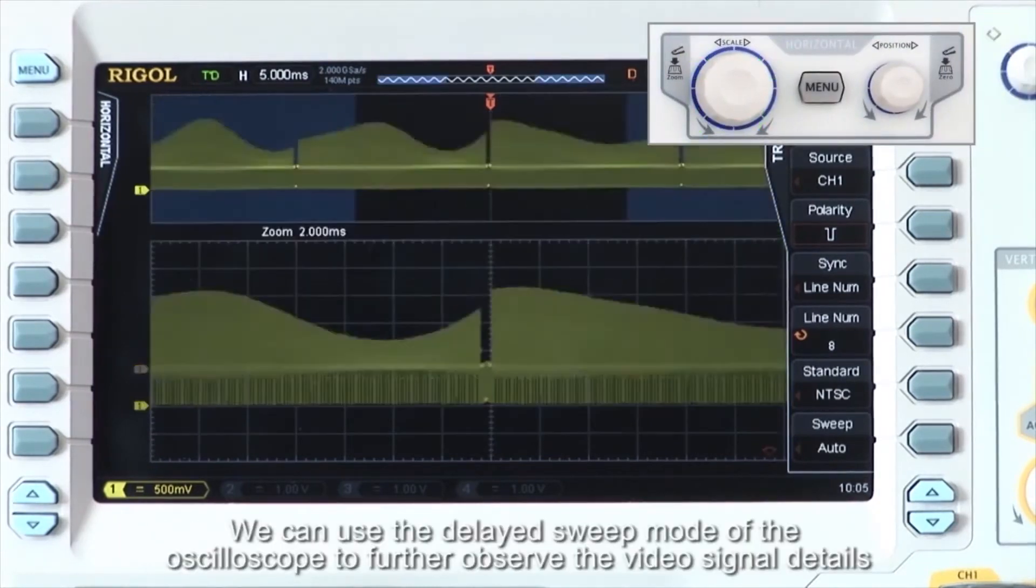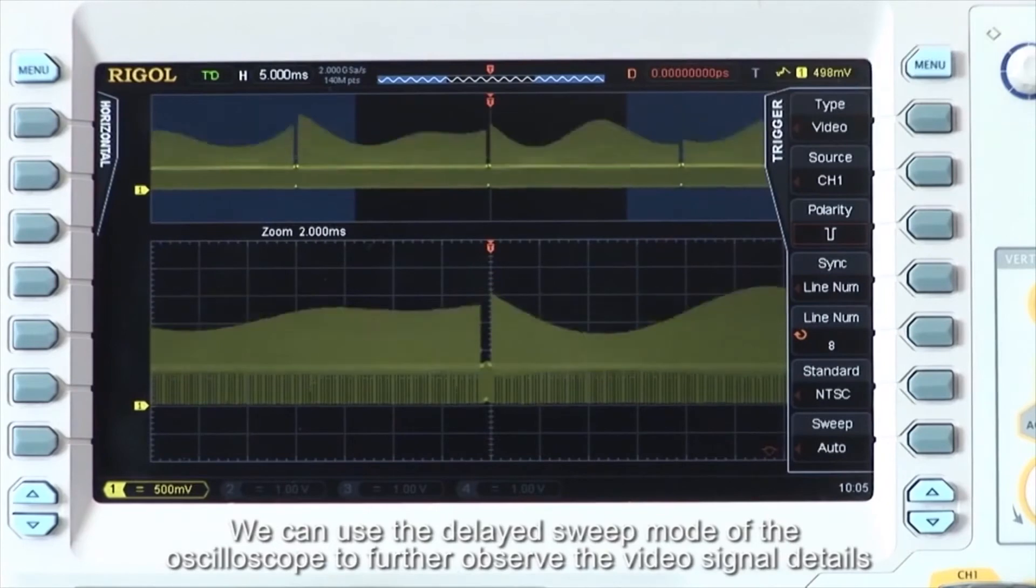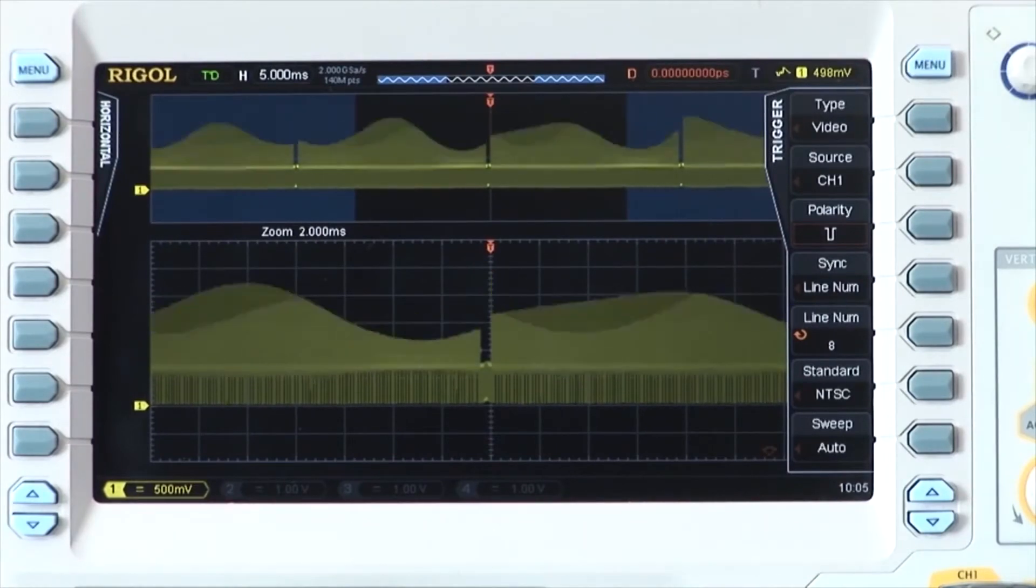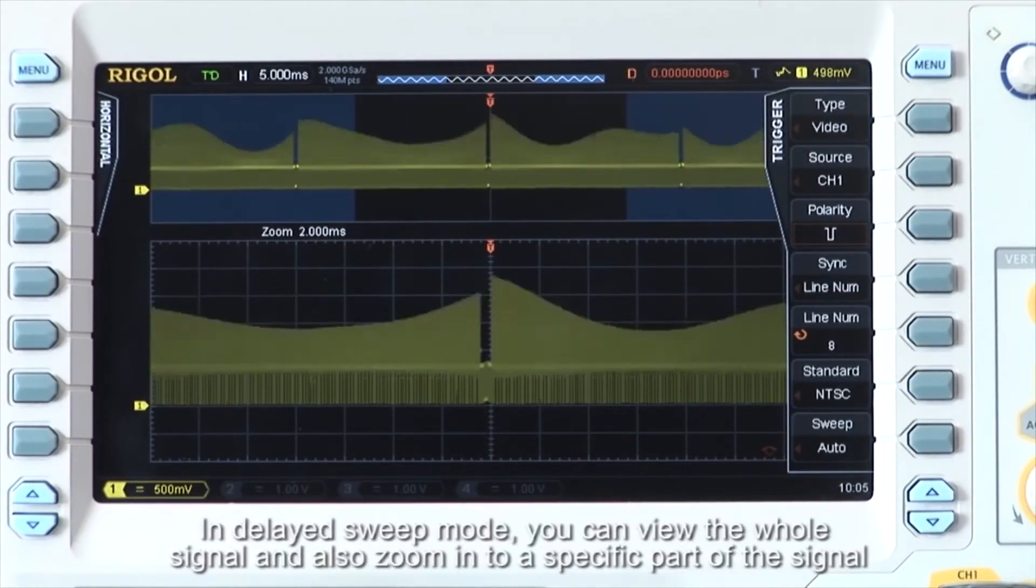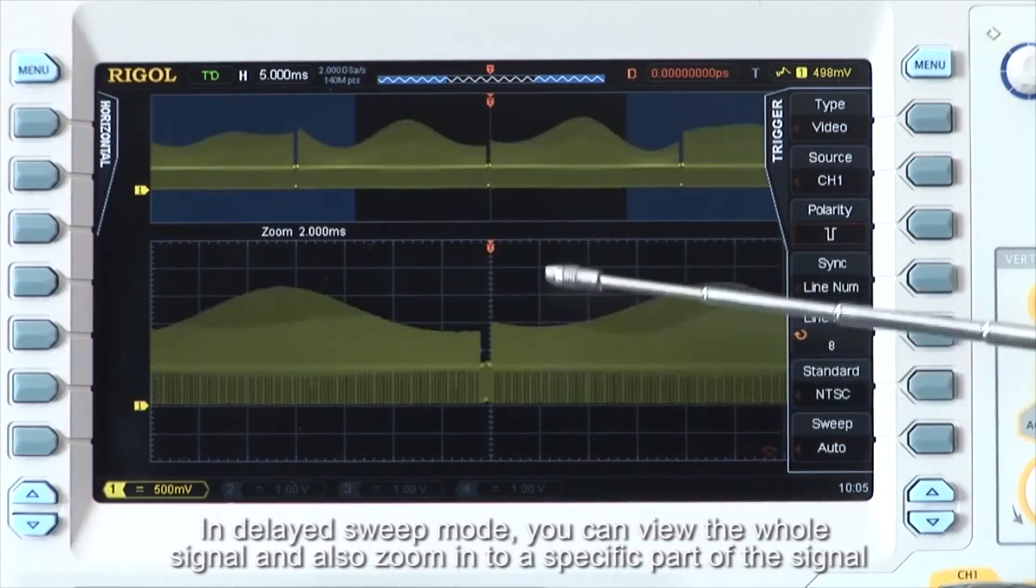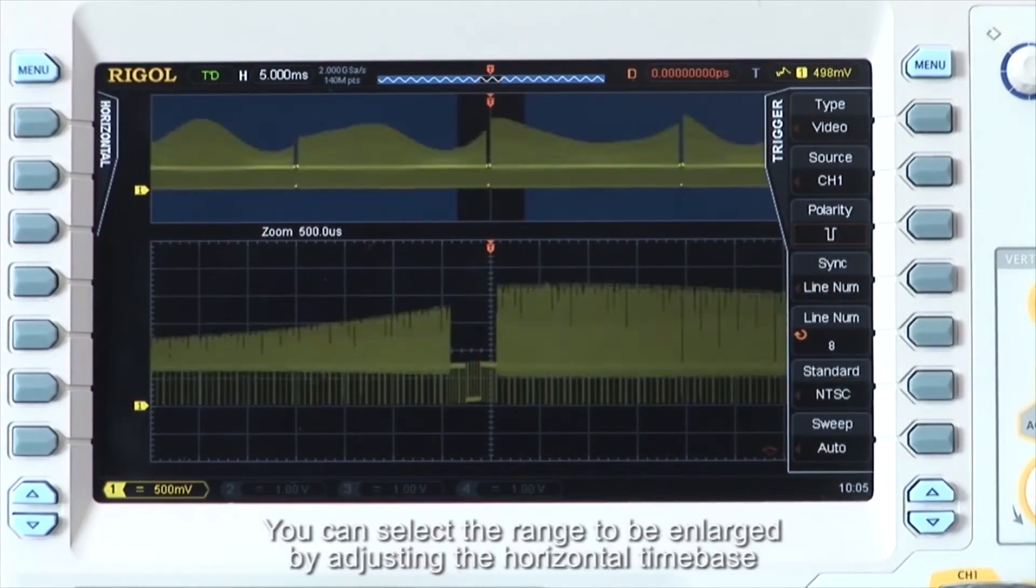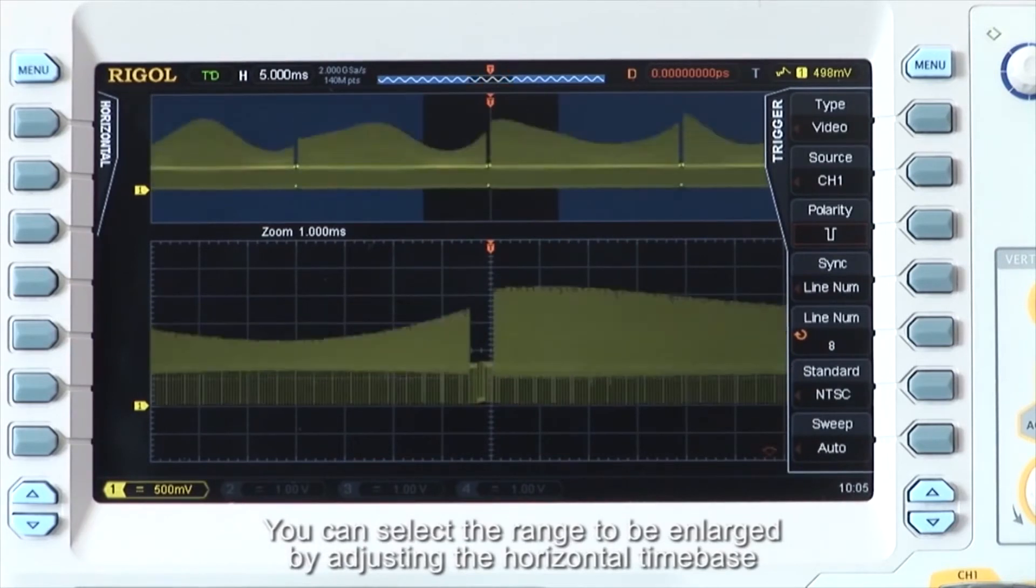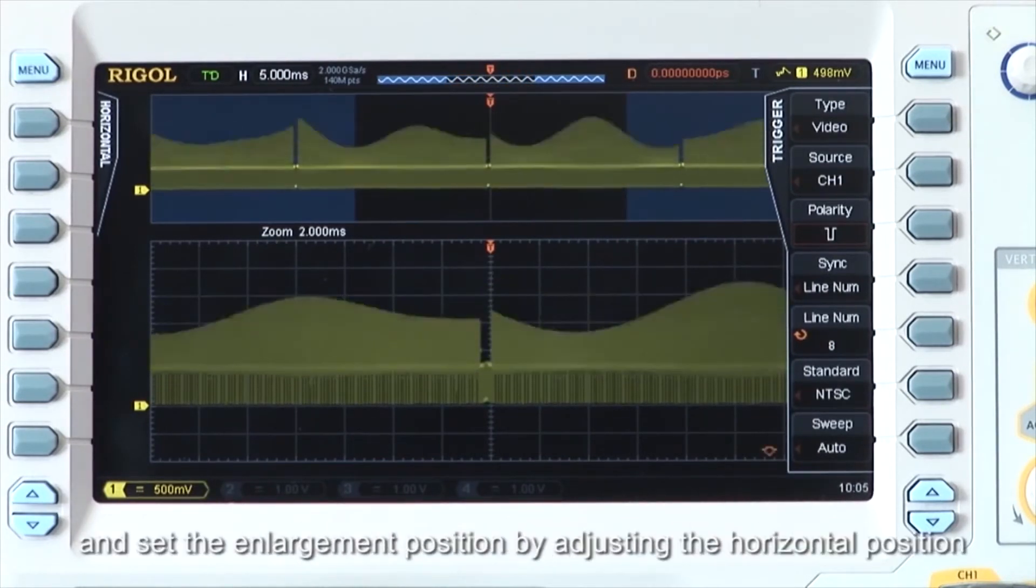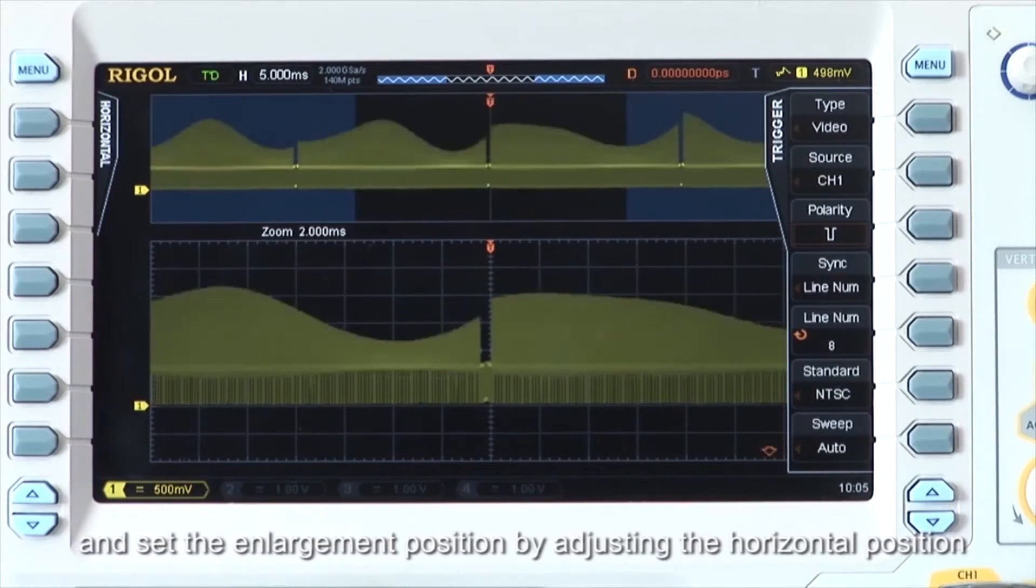We can use the delayed sweep mode of the oscilloscope to further observe the video signal details. In delayed sweep mode, you can view the whole signal and also zoom in to a specific part of the signal. You can select the range to be enlarged by adjusting the horizontal timebase and set the enlargement position by adjusting the horizontal position.